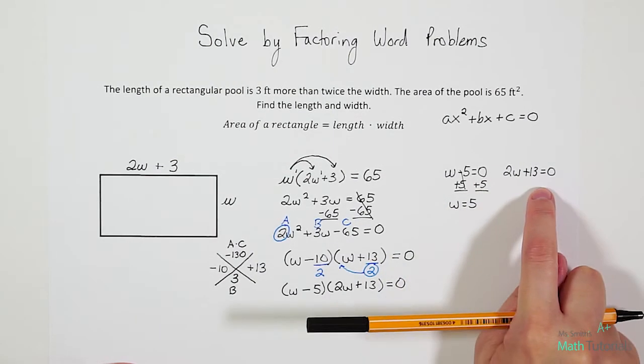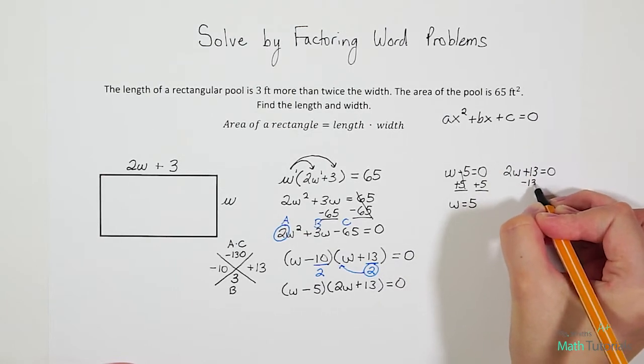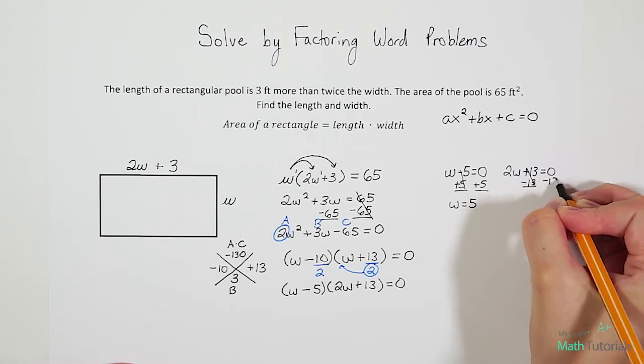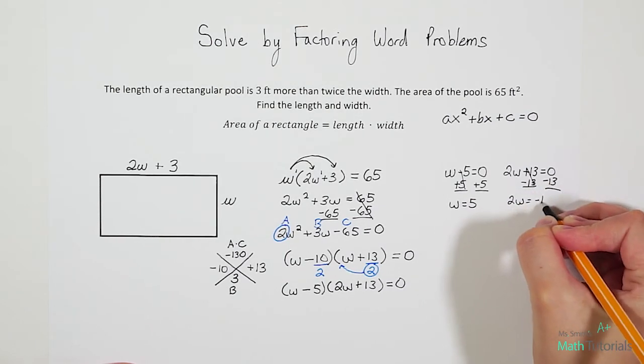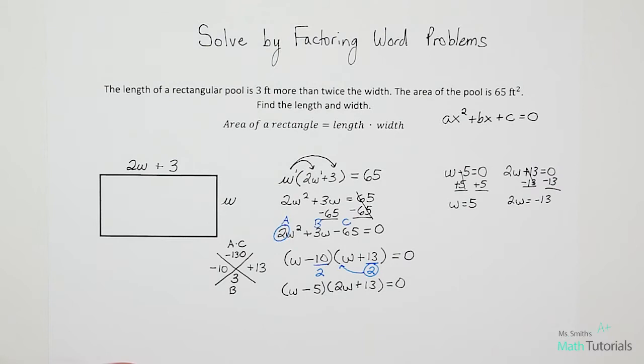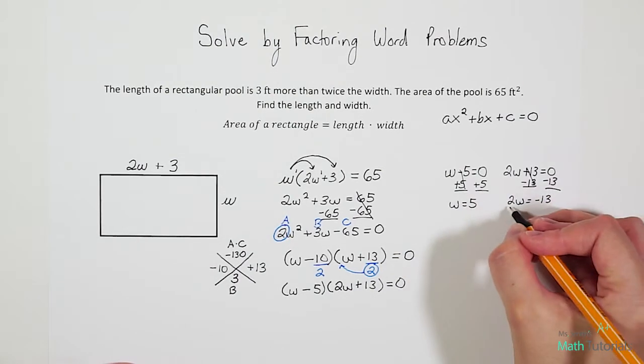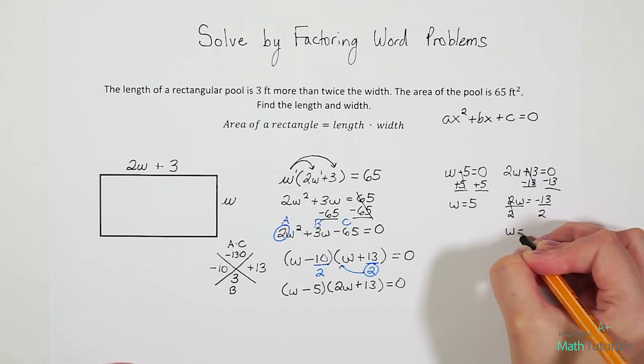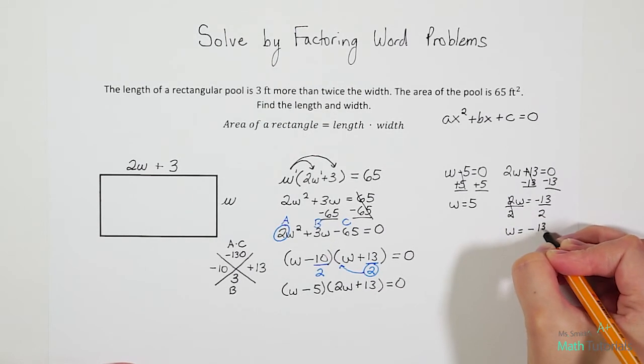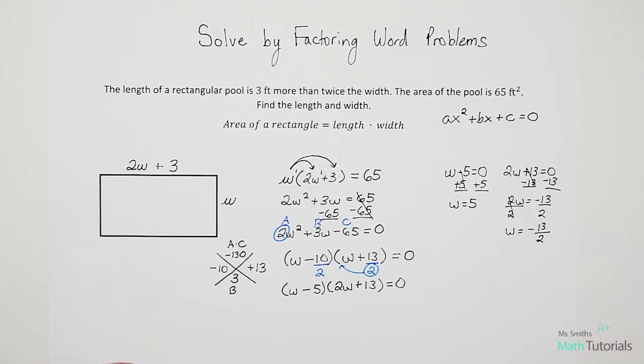For this second problem, I would want to subtract 13. And I get 2W equals 0 minus 13 is negative 13. My final step to get W alone is to divide by 2 on both sides. So I get W equals negative 13 over 2. Or you could give the decimal of negative 6.5, either way.